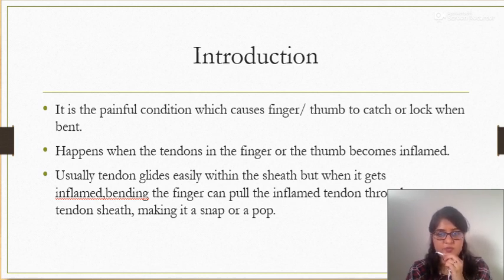It happens when the tendon in the finger or thumb becomes inflamed. Usually the tendon glides easily within the sheath, but when it gets inflamed, flexion of the finger or bending the finger can pull the inflamed tendon through the tendon sheath and it creates the sound of a snap or a pop.